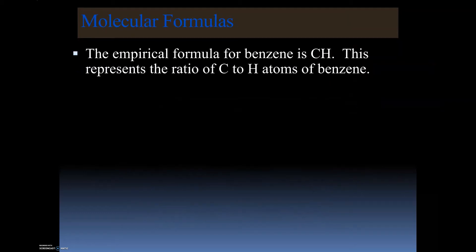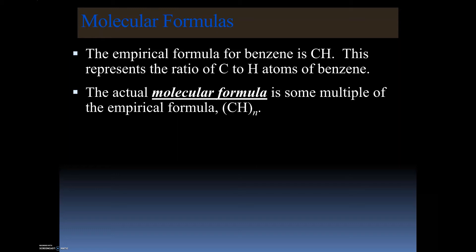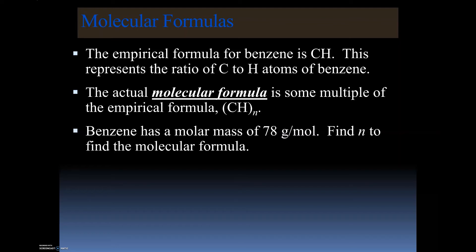The empirical formula for benzene is CH, representing one carbon and one hydrogen. But that does not give us the molecular formula. To find the molecular formula, we determine what multiple the molecular formula is of the empirical formula. Benzene has a molar mass of 78 grams per mole — this information would be provided to you. We need to find n.